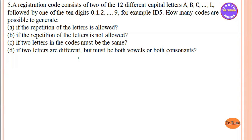In this video, we are going to talk about Chapter 5. Chapter 5 is Permutation and Combination. This is the counting principle of Exercise 5.1, number 5. Number 5 is a registration code.